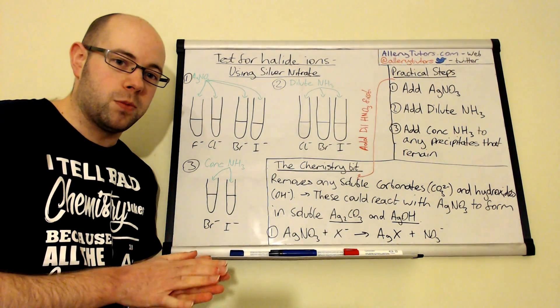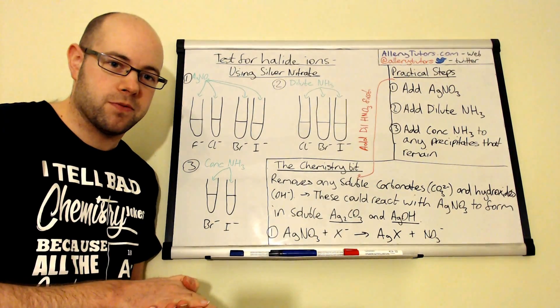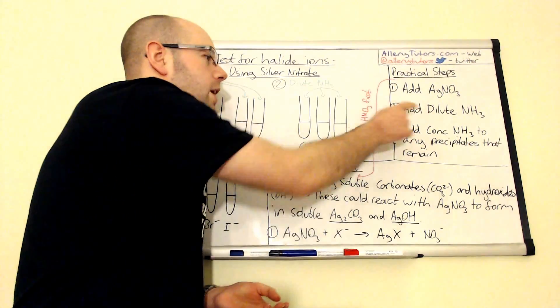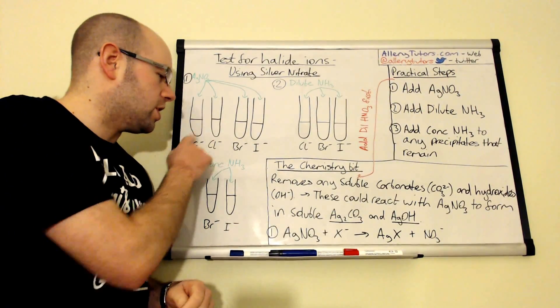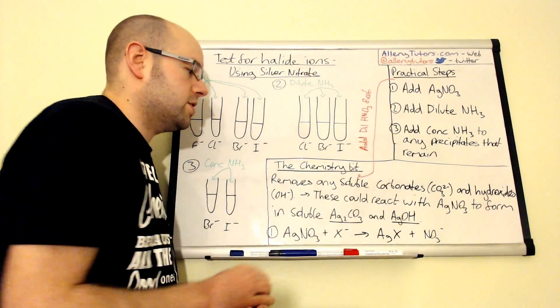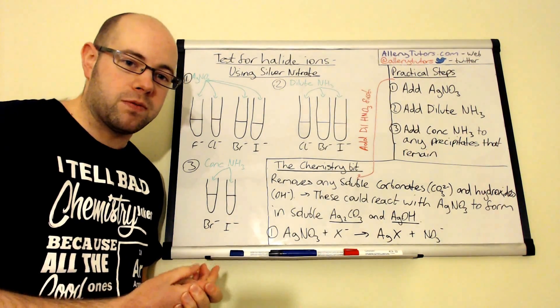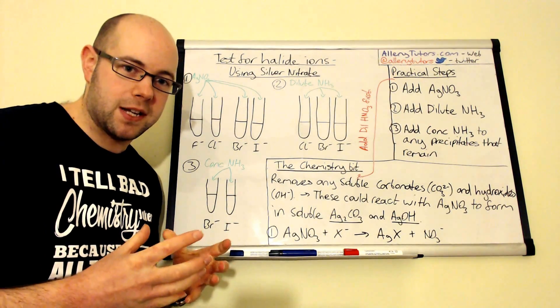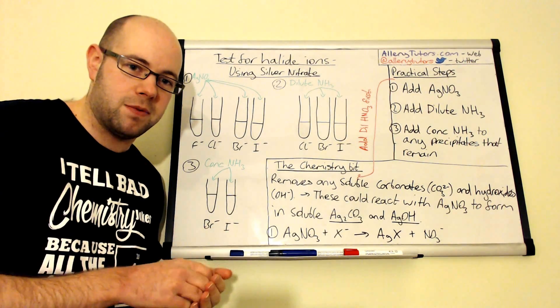This is normally overlooked, but can actually have a big impact on your outcome, on your results. If you add silver nitrate into your solution and your solution has carbonates and hydroxides present, then actually the silver nitrate will react with them and form a precipitate.